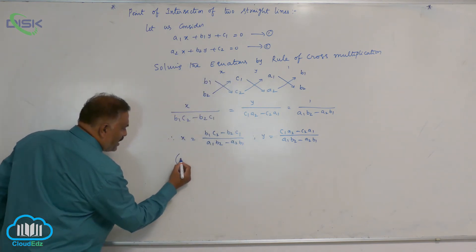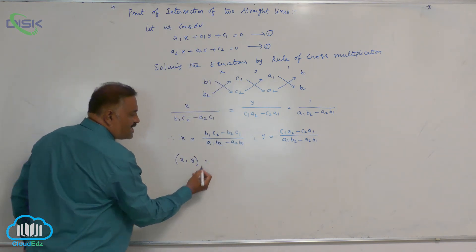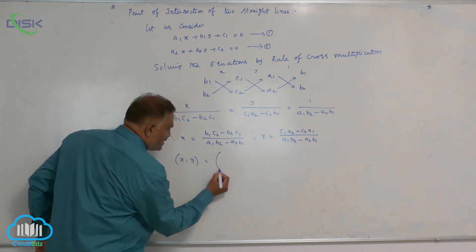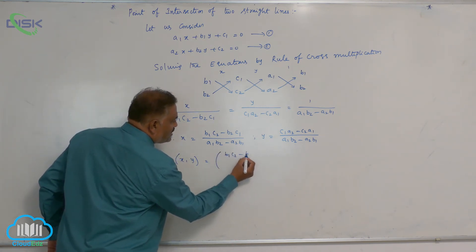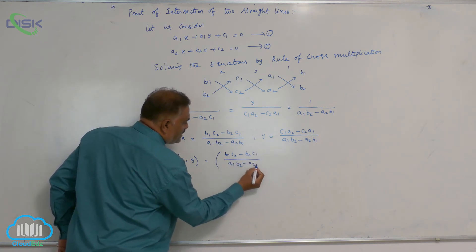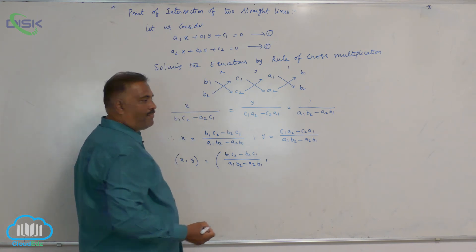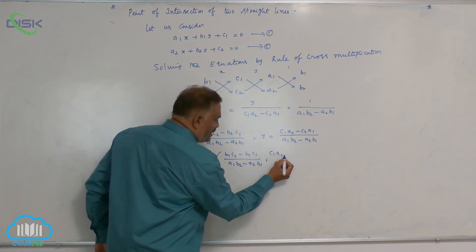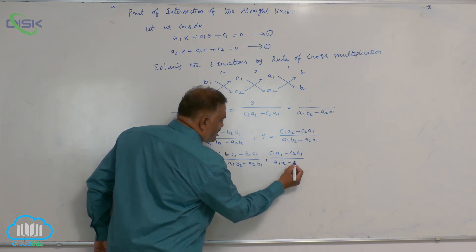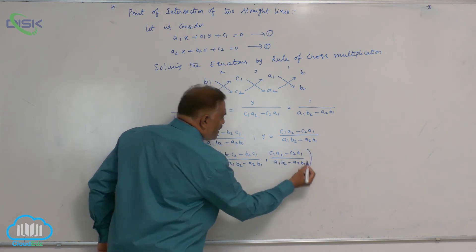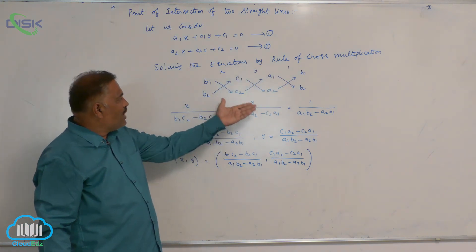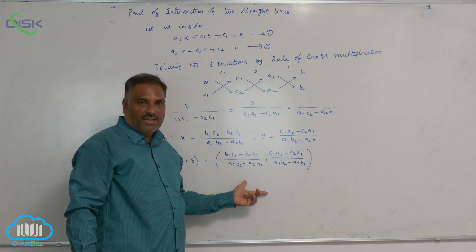We require x comma y, this is nothing but the point of intersection of the two lines. That is b1c2 minus b2c1 by a1b2 minus a2b1 comma c1a2 minus c2a1 by a1b2 minus a2b1. So by rule of cross multiplication, we found the point of intersection of given lines.